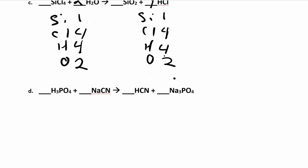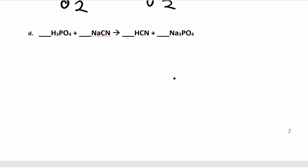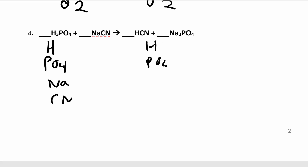The next one is a little bit trickier because you have a lot of polyatomic ions. Sometimes it's easier to keep those polyatomic ions together. Instead of taking phosphoric acid and splitting it up into H, P, and O, you can keep that PO₄ together because you have a PO₄ on the left and a PO₄ on the right — that phosphate ion is not coming apart. Same with the cyanide ion. Treat it like it's one unit, and it makes it a lot easier than splitting it up by atom.